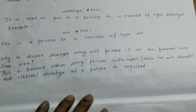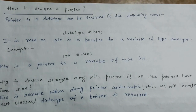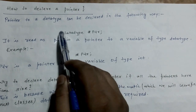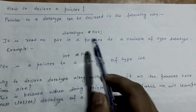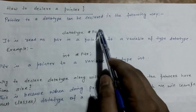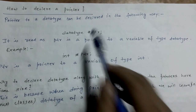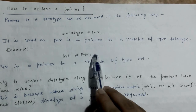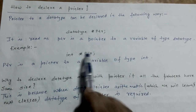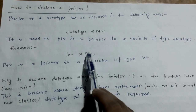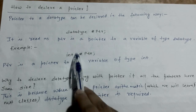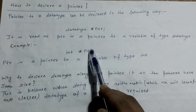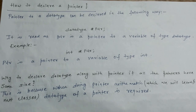You must be thinking how you can declare a pointer variable. You can declare a pointer variable in the following way: first specify the data type of the pointer variable, then the name of the pointer variable, and in front of the name put a star symbol. For example, you write int *ptr. What it means is that ptr is a pointer to a variable of type integer — that means ptr can store the address of a variable of type integer.